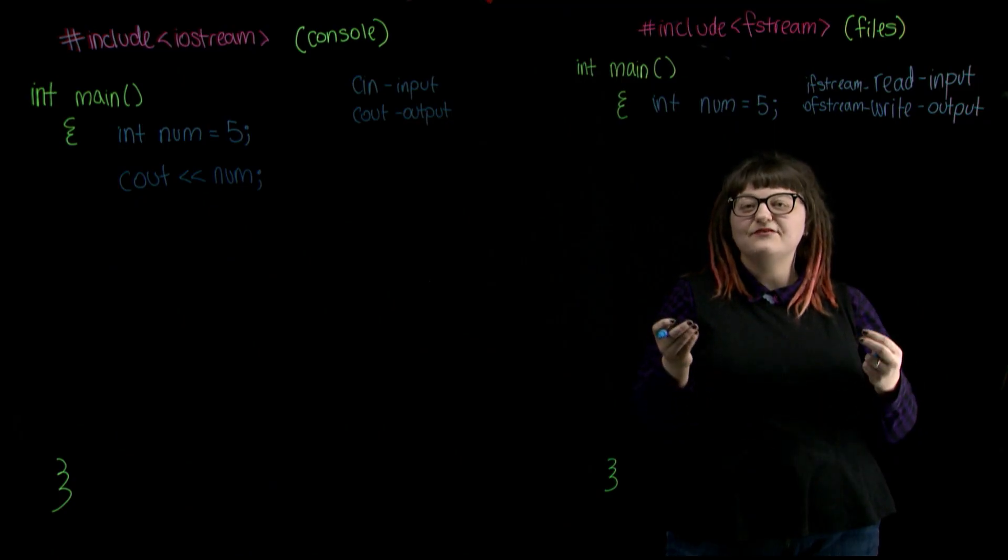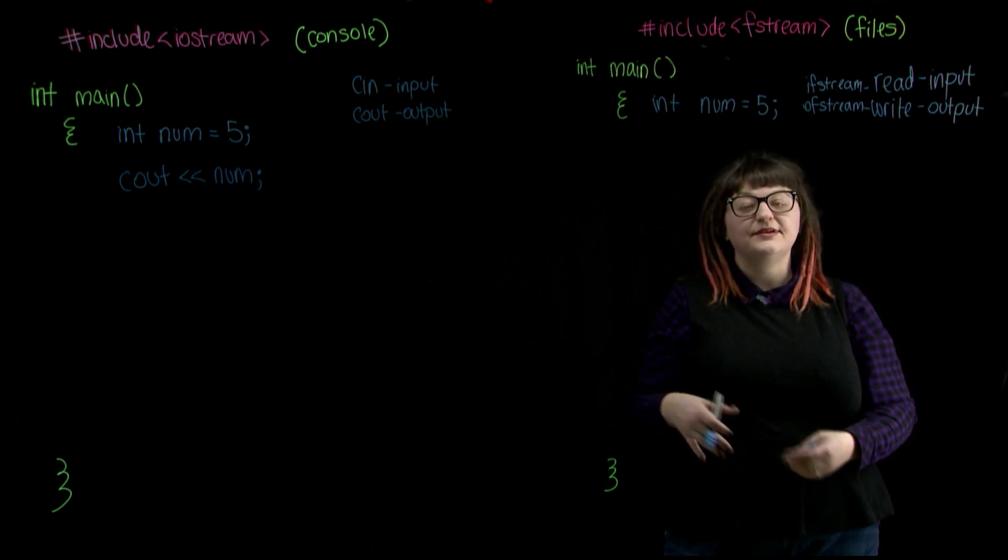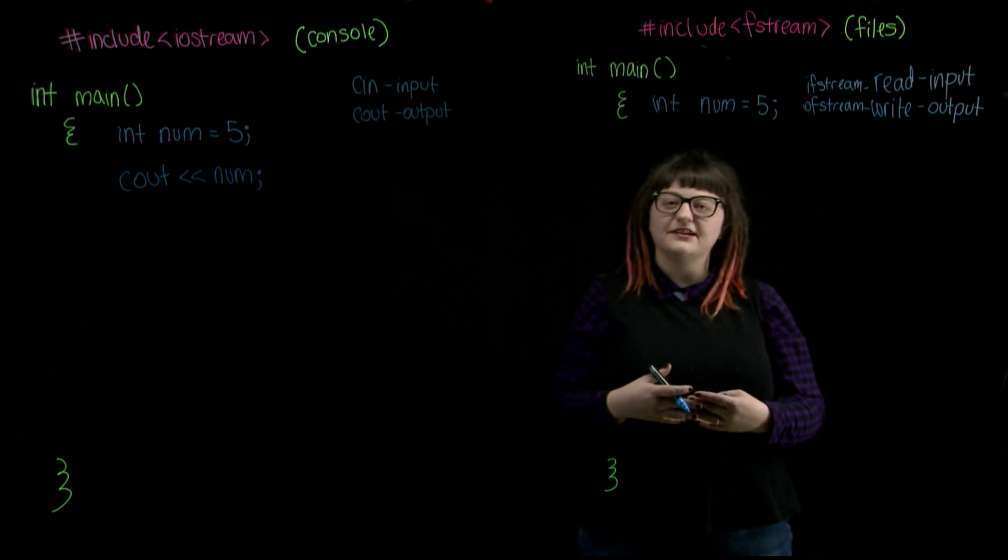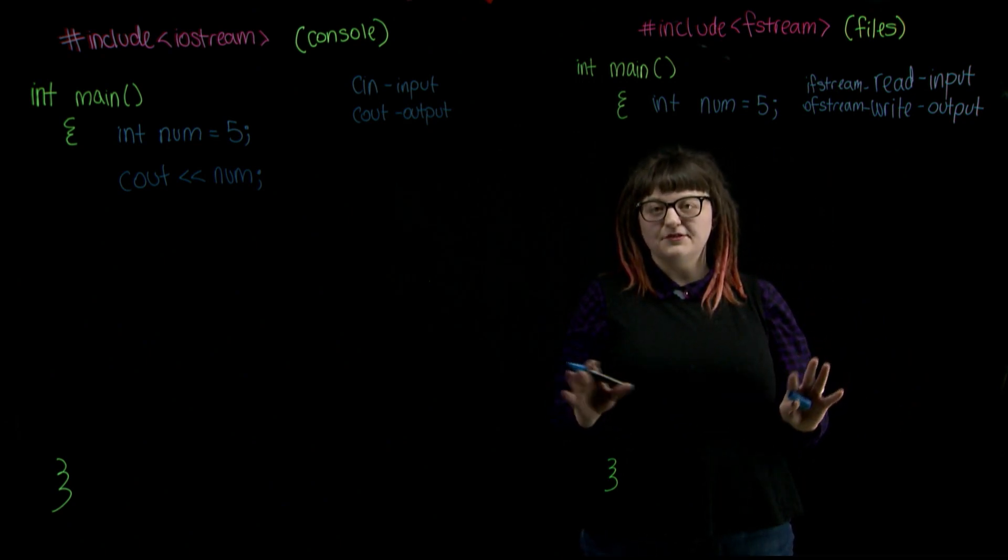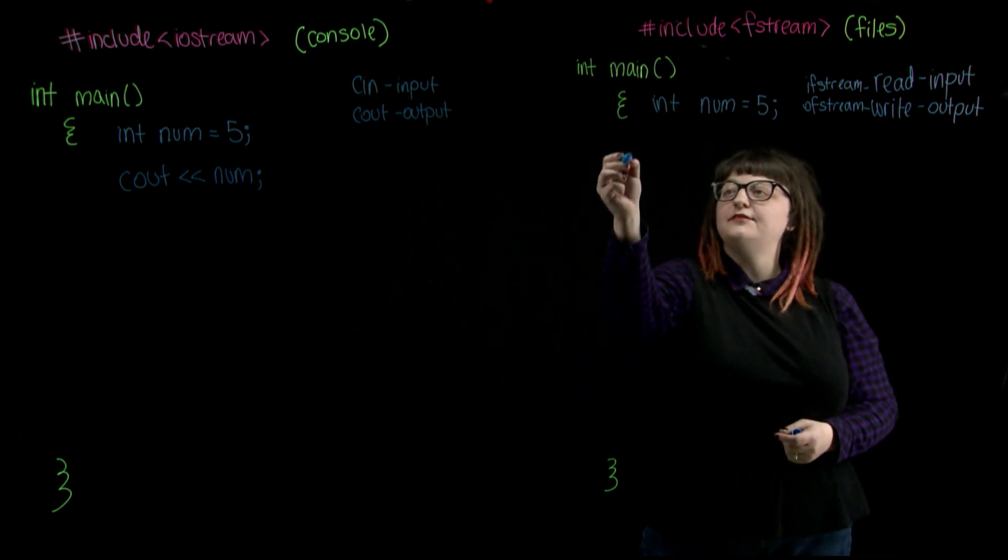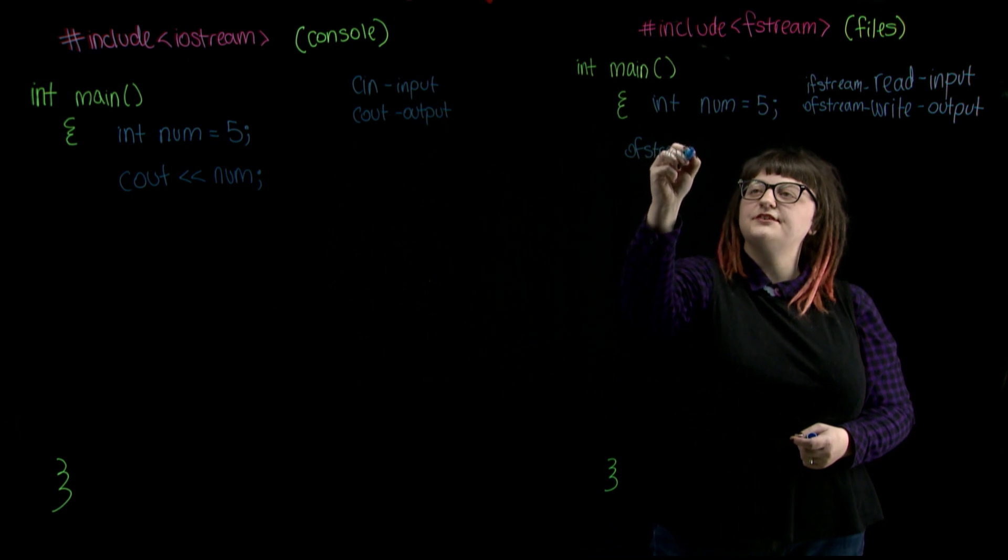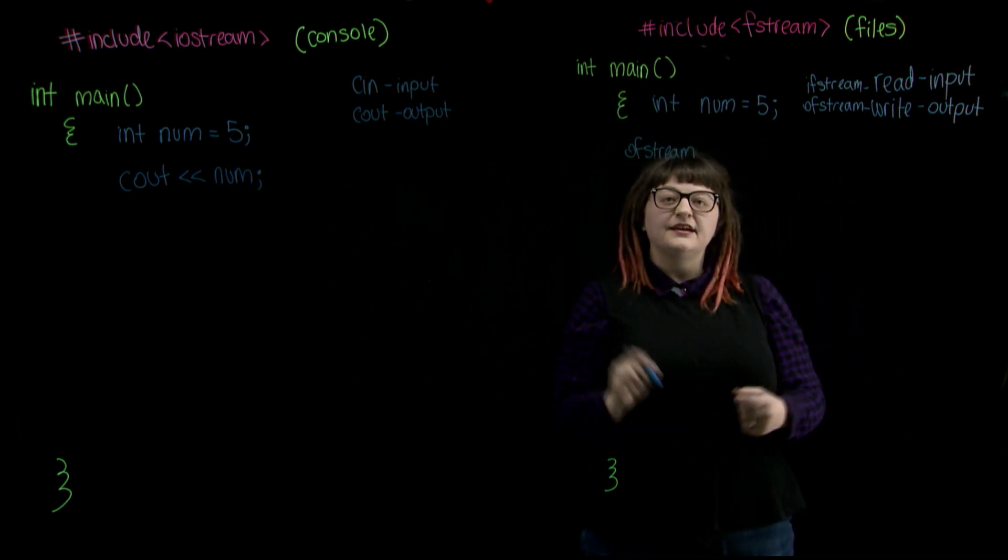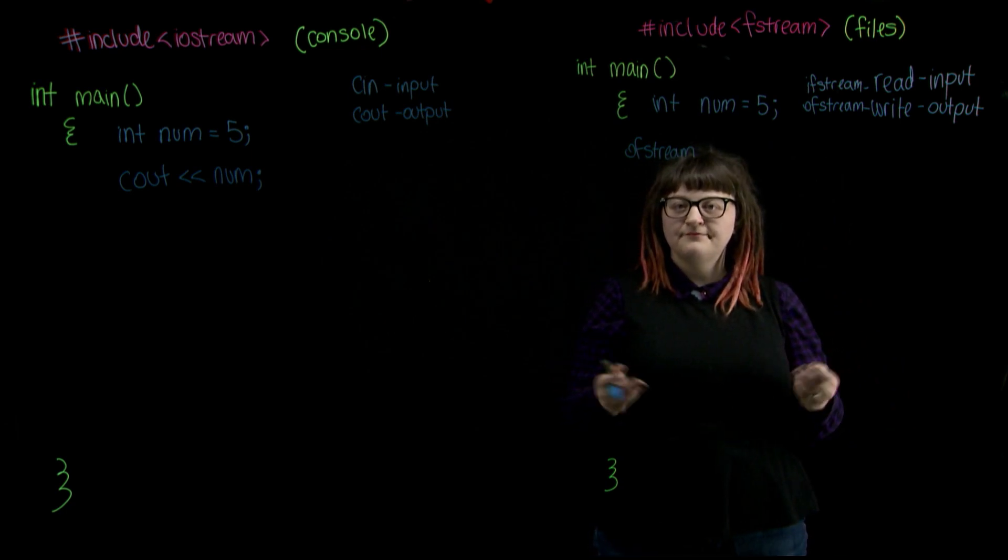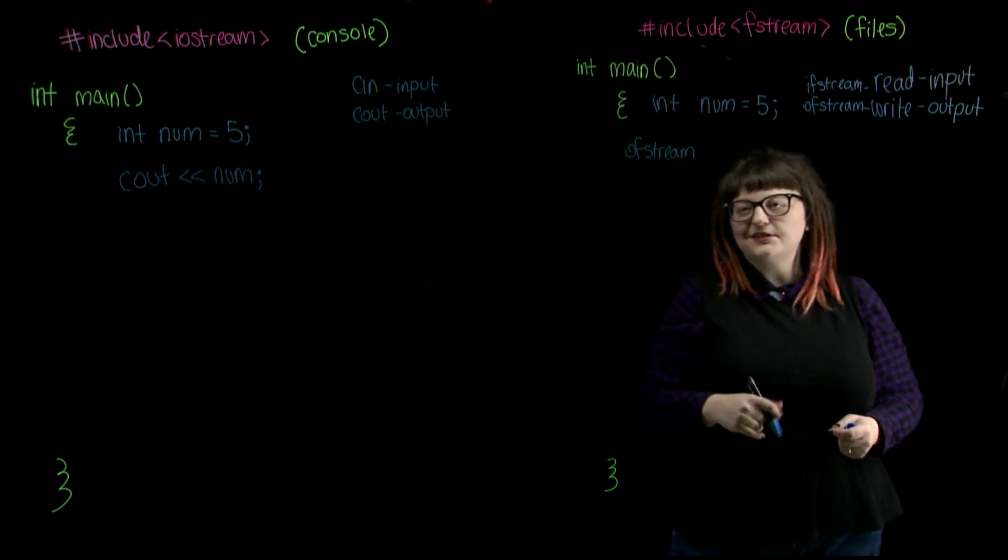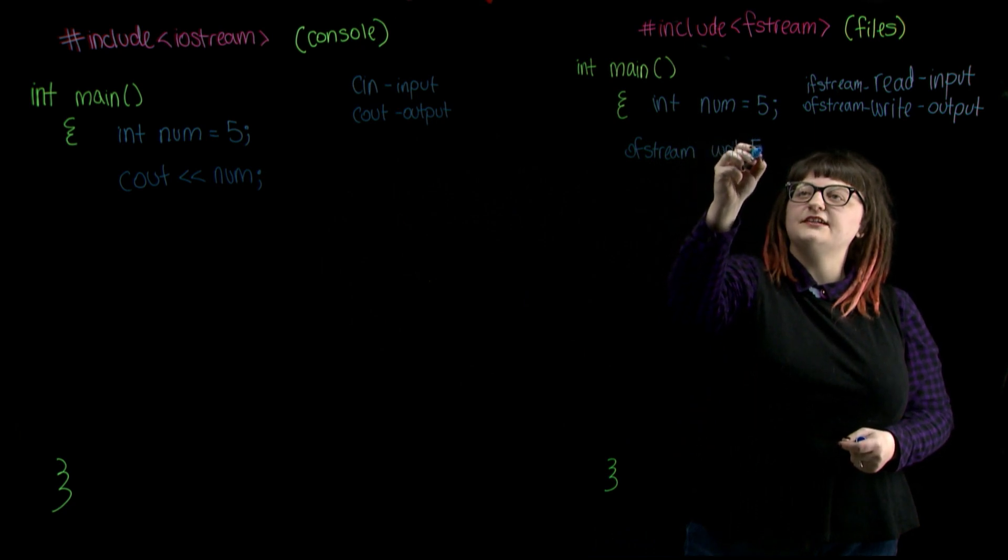Right now, we want to write the value of num to our file. Since we're going to be writing to it, meaning it's an output, we need to start by declaring an ofstream file object. We're going to do it just like we would a variable. First we need our data type. There's our ofstream. Next, we need to give our declaration a name so that we can call it in our program. For this one, let's just call it writeFile, since we're writing to it.